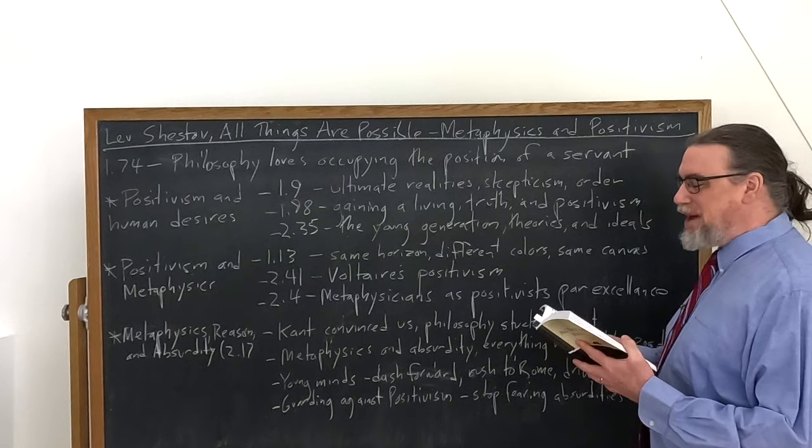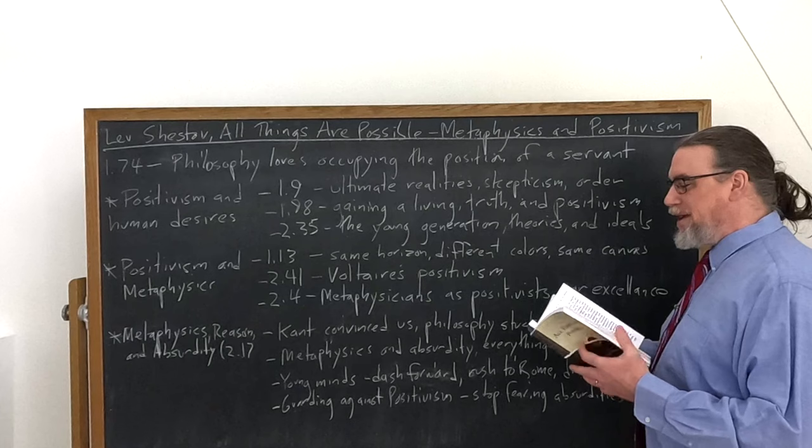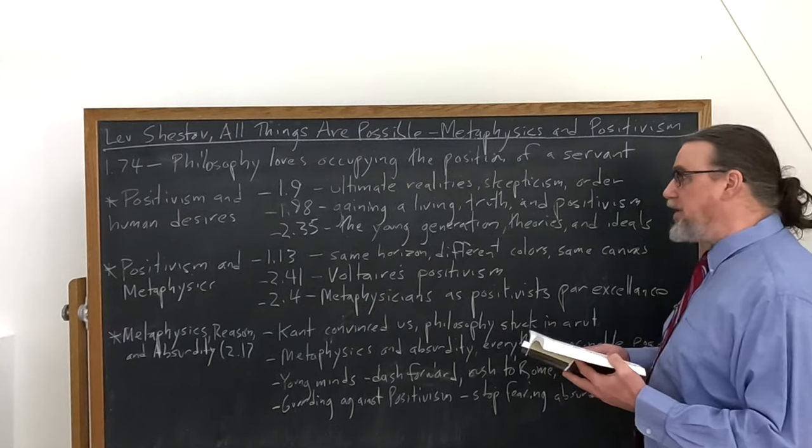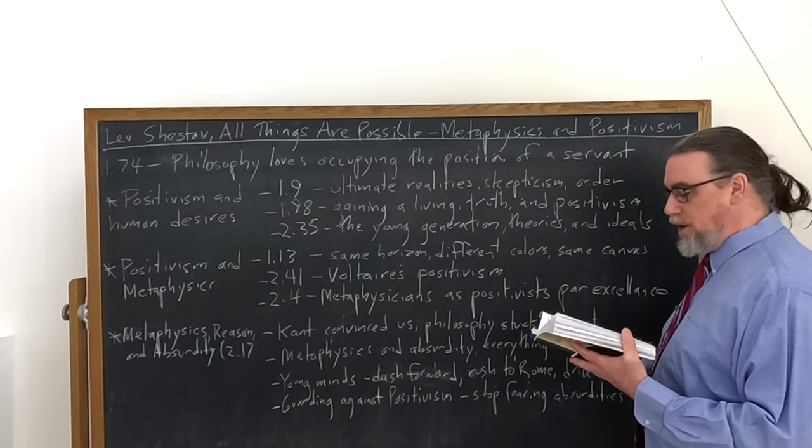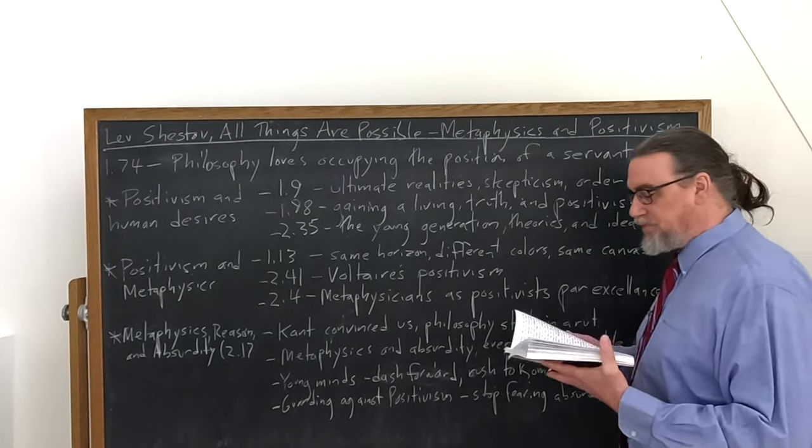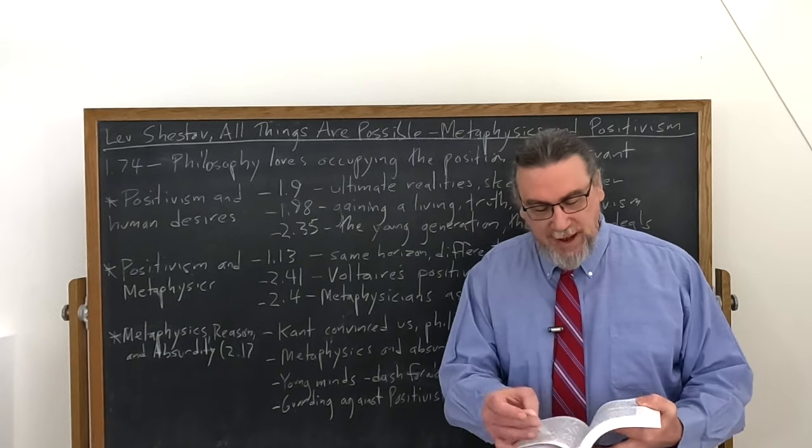He talks, as I mentioned before, about Voltaire's positivism. Very briefly, this is in chapter 41. He says that this is in a chapter called Metaphysical Consolations. It says that the more that you pierce to the ultimate ends of the infinite metaphysical problems, the more finite they reveal themselves.